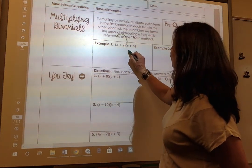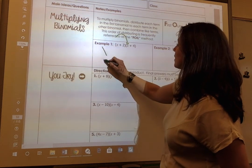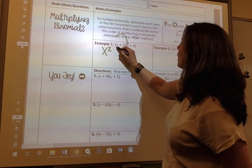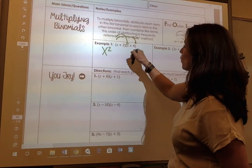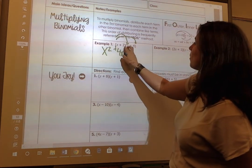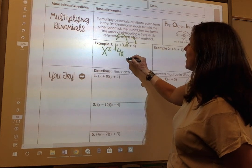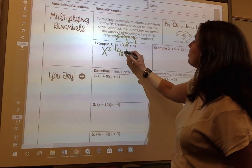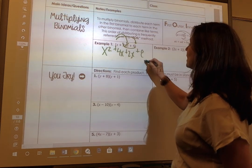That means I'm going to multiply my first terms. x times x is x squared. I can multiply my outer terms, which is x and 4. Those are outside. And that's 4x. I can multiply my inner terms, 2 and x, which is 2x. And my last terms, which is 2 and 4, and that's 8.